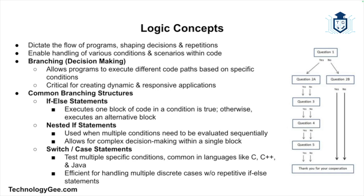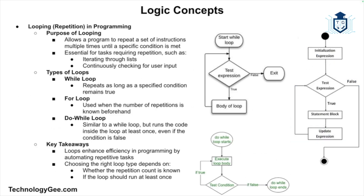Nested if statements allow multiple conditions to be checked. Switch/case statements are another branching structure used to test multiple conditions, commonly found in languages like C, C++, or Java. Branching is crucial because it allows programs to make decisions based on input, user interactions, and other data.